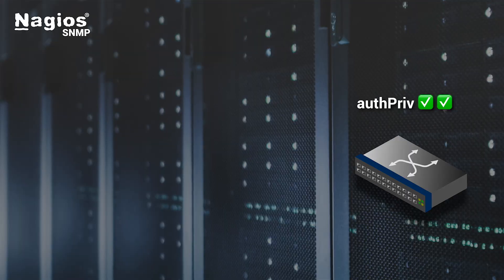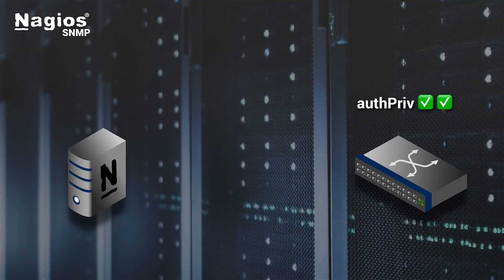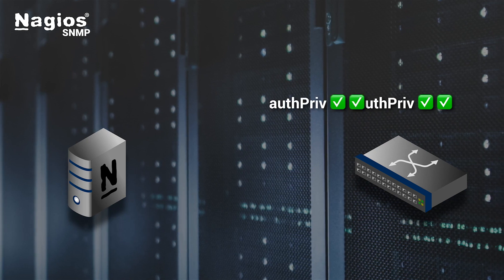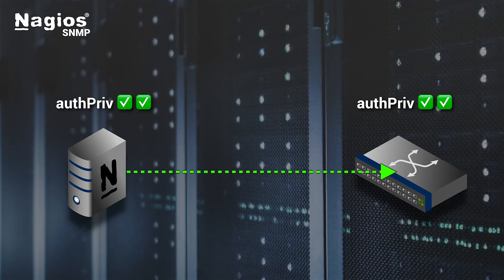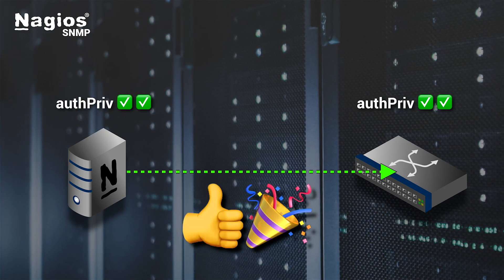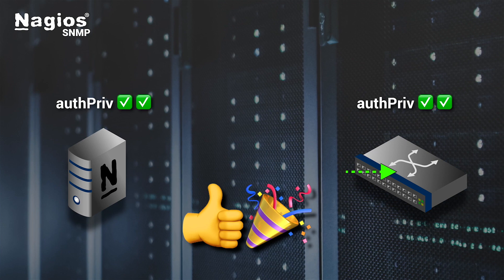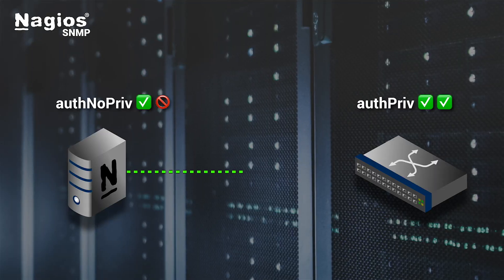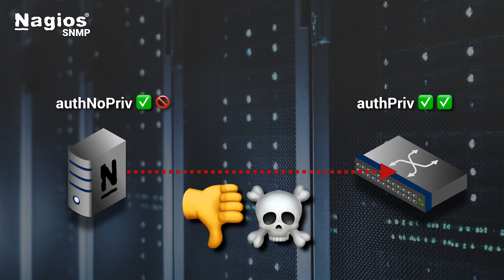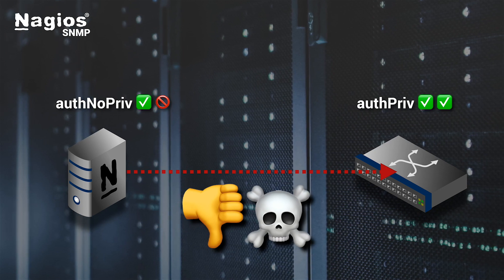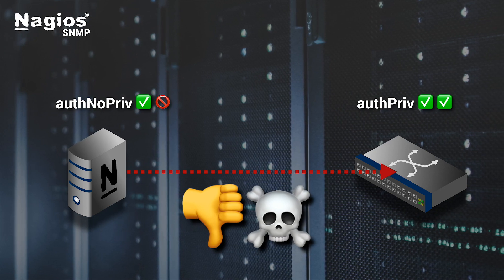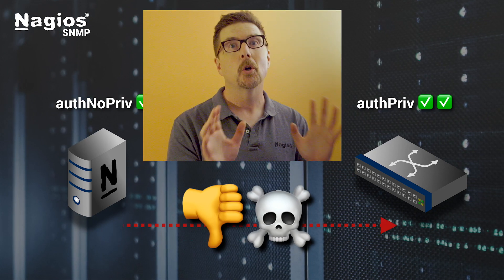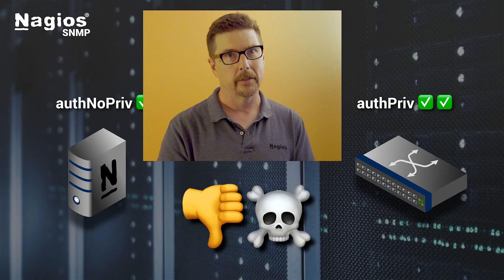You then configure your network monitoring system, like Nagios XI, to match the security level configured on the device for the username. If the monitored device expects one security level for a username but you are using a different one on your network monitoring solution, your monitoring will not work.